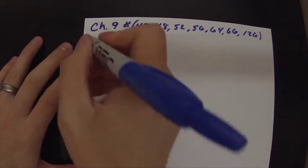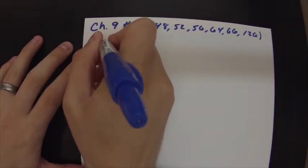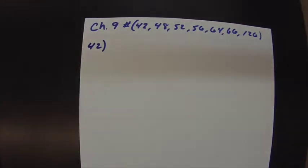Alright, so here are some selected problems from Chapter 9. We'll start with number 42. Basically, number 42 just says to use the Lewis symbols to determine the formula for the compound that forms between each pair of elements. Now this should look really familiar. You've done this before. It's ionic compounds.